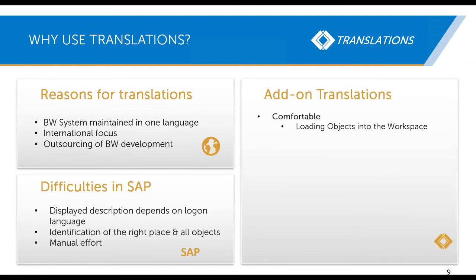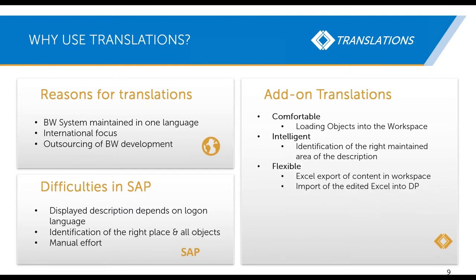First of all, it's really comfortable. You can search for a specific entity or for specific entities, load objects into a workspace, and then display the descriptions of those entities. It's intelligent because we identify the right maintained area of the description — is it info object specific or info provider specific? And it's flexible because you can export the workspace into an Excel file, edit and translate the descriptions, and afterwards import this Excel file back into Doku Performer. Then you have all of the maintained descriptions in translations.